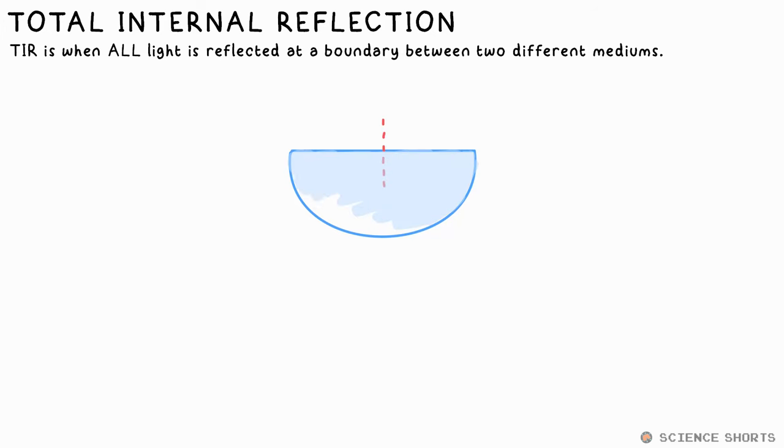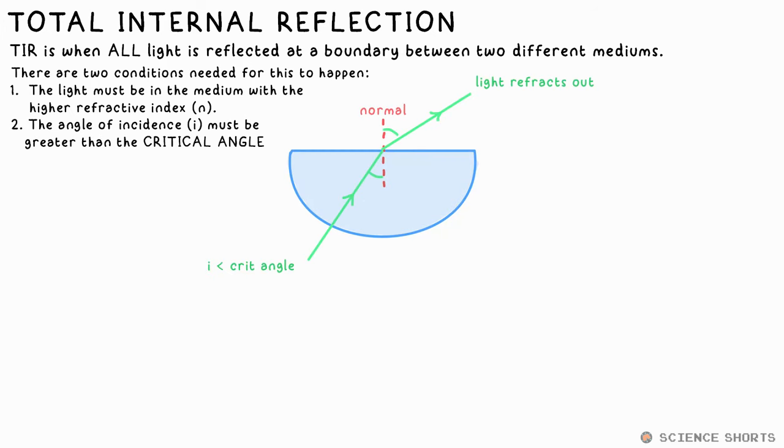Let's say the light ray is coming out of the glass block and into air. Now if we keep increasing this angle of incidence, eventually we'll end up with an angle of refraction of 90 degrees. That light ray will be going along that boundary, along the surface. The angle of incidence is now equal to what we call the critical angle, and that's going to be different for every medium.